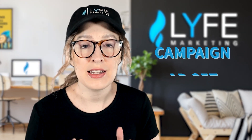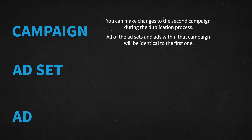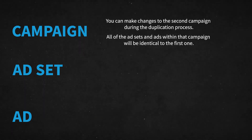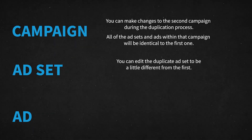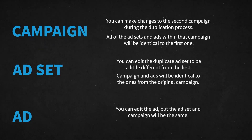Keep in mind that you're only editing or changing one of the three levels — the three levels being campaign, ad set, and ad. So if you're duplicating a campaign, you can make changes to the second campaign during the duplication process, but all of the ad sets and ads within that campaign will be identical to the first one unless you go back and manually change them one by one later. If you duplicate an ad set, you can edit the duplicate ad set to be a little different from the first, but the campaign and the ads will be identical to the ones from the original. And if you're duplicating an ad, you can edit the ad, but the ad set and campaign that it's in will be the same.